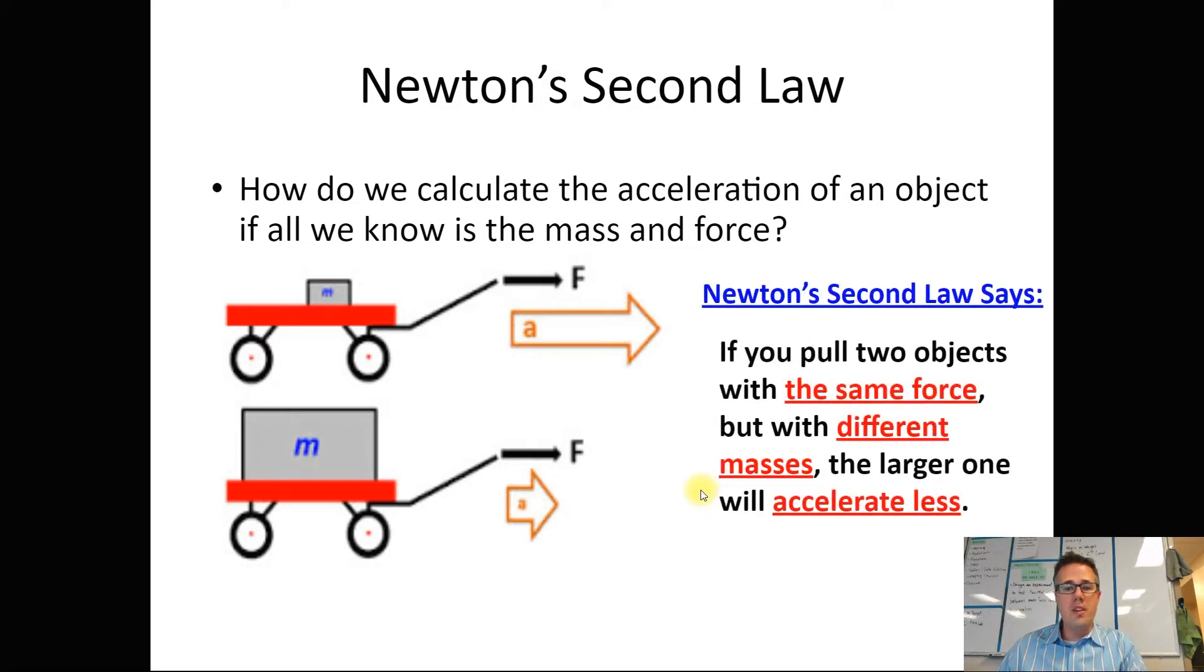So Newton's second law basically says if you pull on two objects with the exact same force, but those two objects have different masses, well, the larger one is going to accelerate less, and this is something that hopefully feels pretty intuitive.